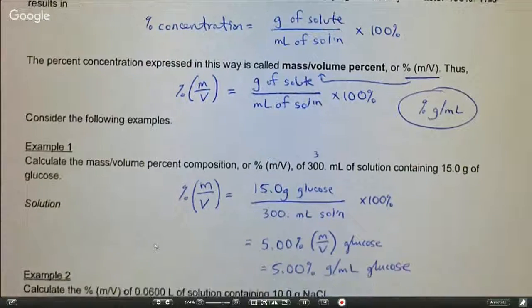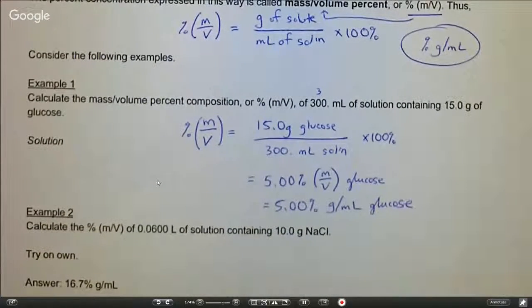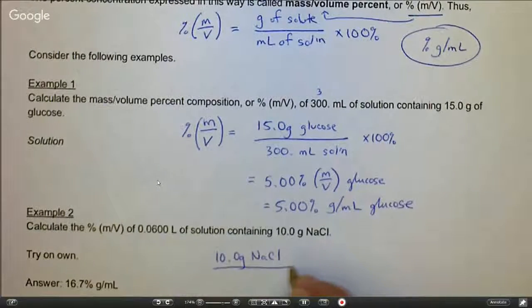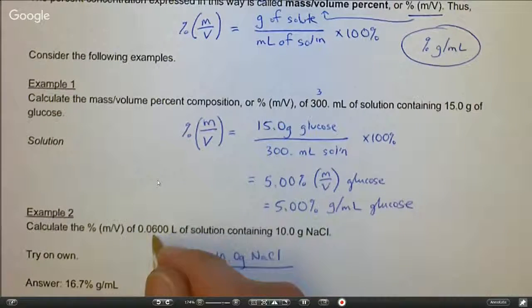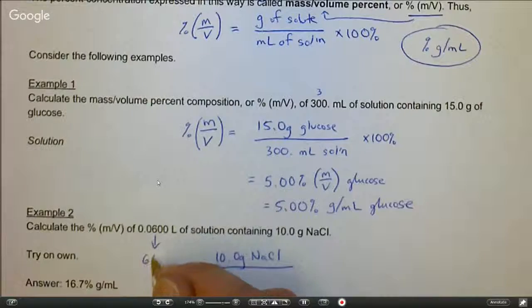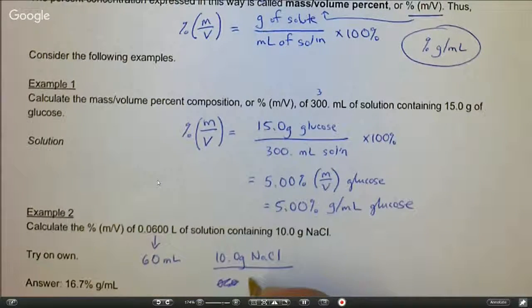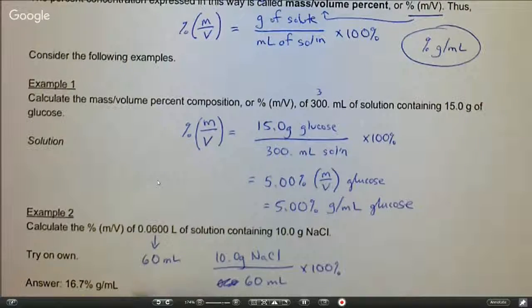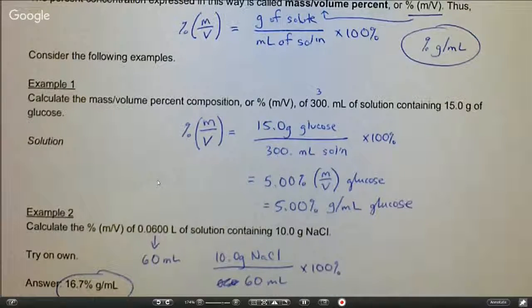Example two: I indicate the answer here but why don't you take a few moments, pause the video and try this one on your own. You should work out and get 16.7 percent grams per milliliter. You would have 10 grams of NaCl over 0.06 liters which changes to 60 milliliters, and we want grams per milliliter, so 60 milliliters times 100%, and that comes out to 16.7 percent grams per milliliter.